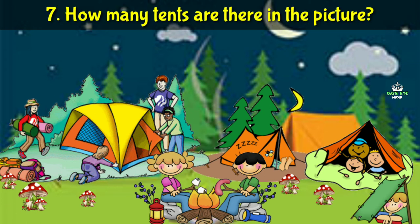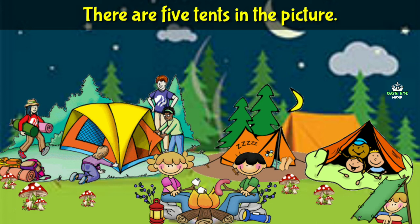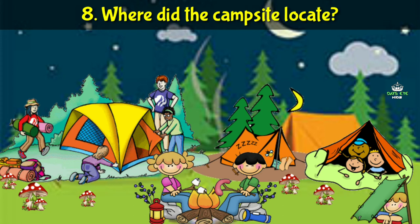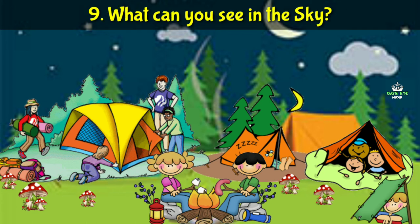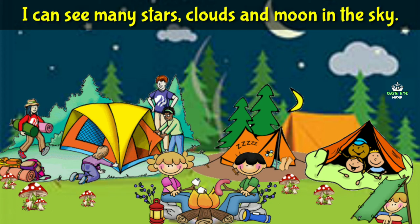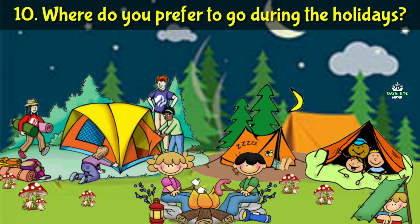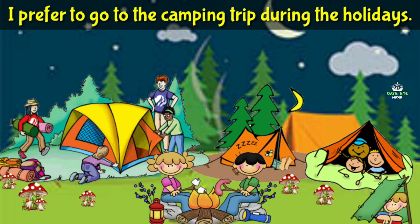What insect can you see in the picture? I can see a bee in the picture. How many tents are there in the picture? There are five tents in the picture. Where is the campsite located? The campsite is located at the forest. What can you see in the sky? I can see many stars, clouds, and the moon in the sky. Where do you prefer to go during the holidays? I prefer to go on a camping trip during the holidays.